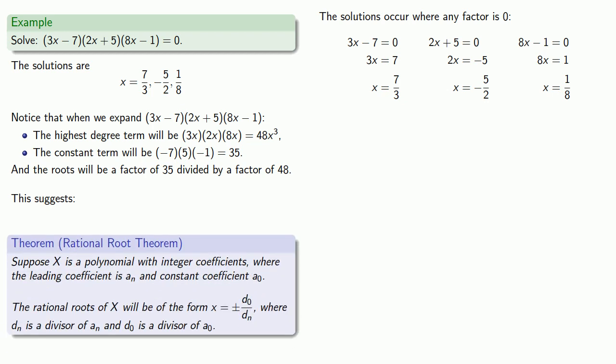Suppose capital X is a polynomial with integer coefficients, where the leading coefficient is a_n and the constant coefficient is a_0. Then the rational roots of X, whatever they happen to be, will be of the form x equals plus or minus d_0 over d_n, where d_n is a divisor of a_n and d_0 is a divisor of a_0. You can think of these as divisor of the constant over divisor of the leading coefficient.